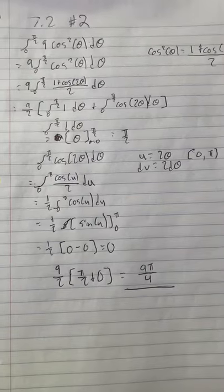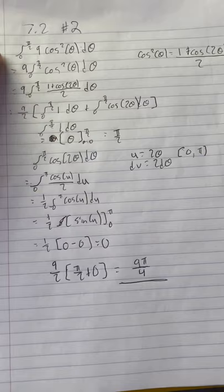I had chapter 7.2, problem number 2. The problem was the integral from 0 to pi over 2 of 9 cosine squared theta.